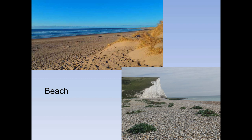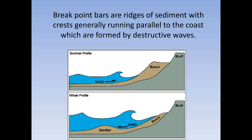At A level we need to talk about features that you find on beaches. Break point bars - they have different names, sometimes called break point bars. We've talked about these before because they are created by destructive waves, which in the UK we generally get in the winter. In winter we tend to get more storms, storms create destructive waves, and destructive waves have powerful backwash so they take material off a beach. That material creates a break point bar - the powerful backwash takes material off the beach and deposits it in the near shore zone in a ridge called a break point bar.